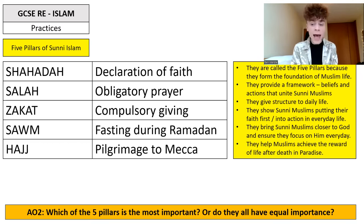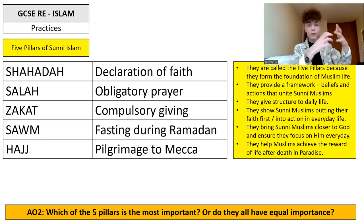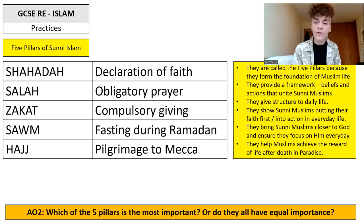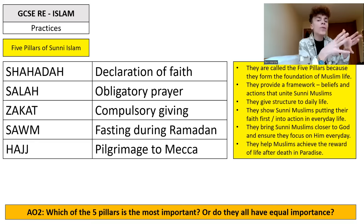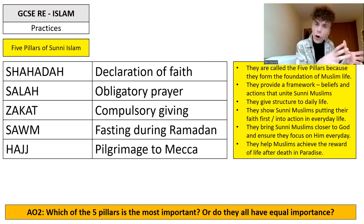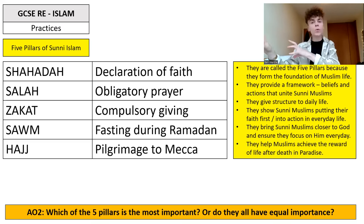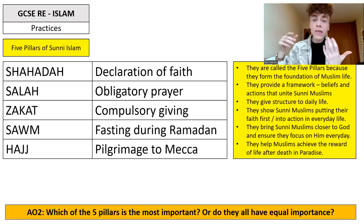The five pillars also bring Sunni Muslims closer to God and ensure they focus on him every day. These practices are derived from the Quran, the infallible revealed word of God. By performing these five pillars, you are able to honour God, develop a relationship with him, and fulfil his wishes for how you will live your life. They also help Muslims achieve the reward of life after death in paradise. Remember, you're only in this world for a very short time compared to the eternity you'll spend either in paradise or in hell.